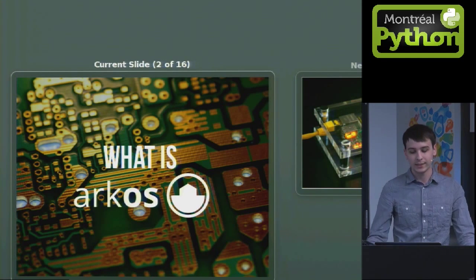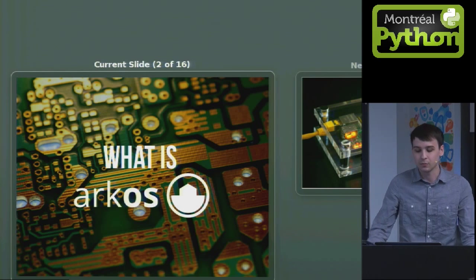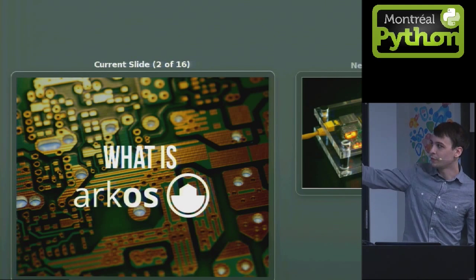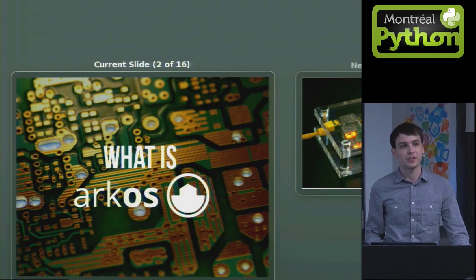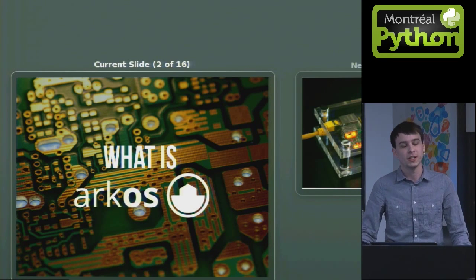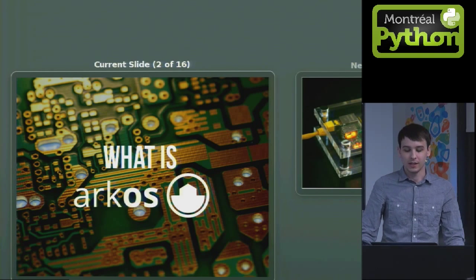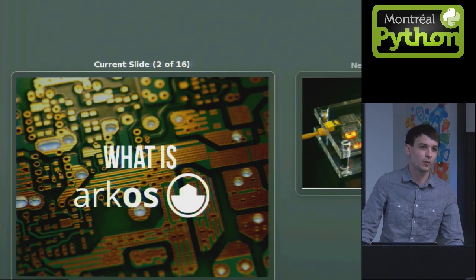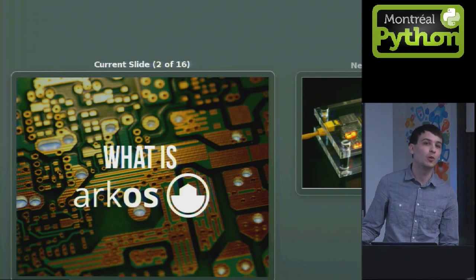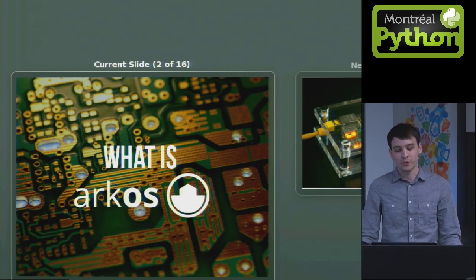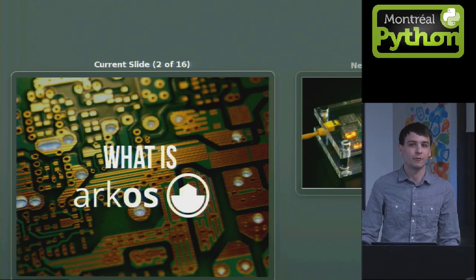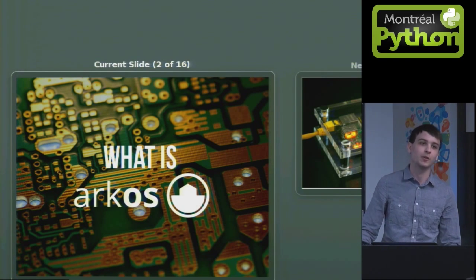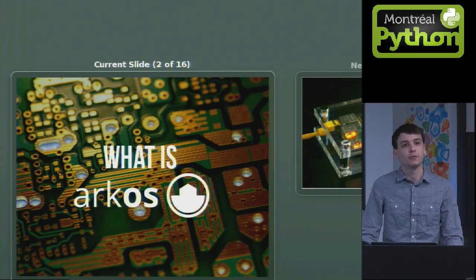So what is ArcOS? It's an operating system that's primarily geared towards embedded machines. If you know what the Raspberry Pi is, it's a $35 microcomputer about the size of a credit card, and you can run a server on it. We're not just targeting the Raspberry Pi either — there's lots of other ARM platforms we're working with, like the BeagleBoard and the CUBIE board. There's a whole ecosystem there that we're targeting first and foremost, and eventually it'll be supported on full-size x86 machines as well.